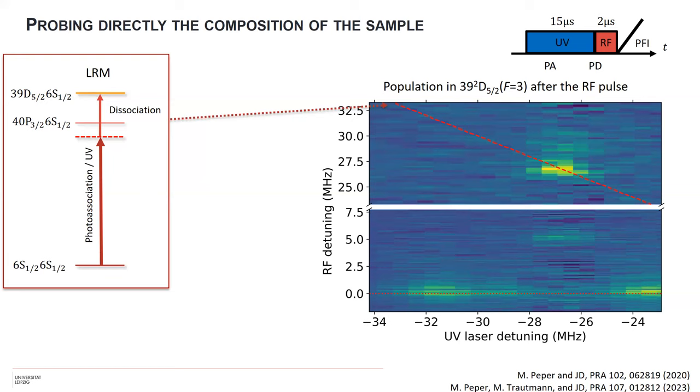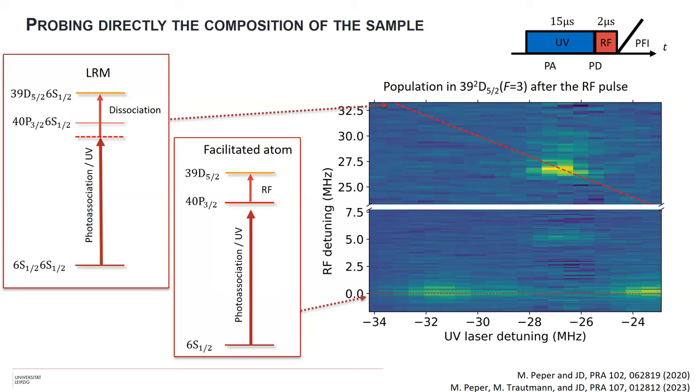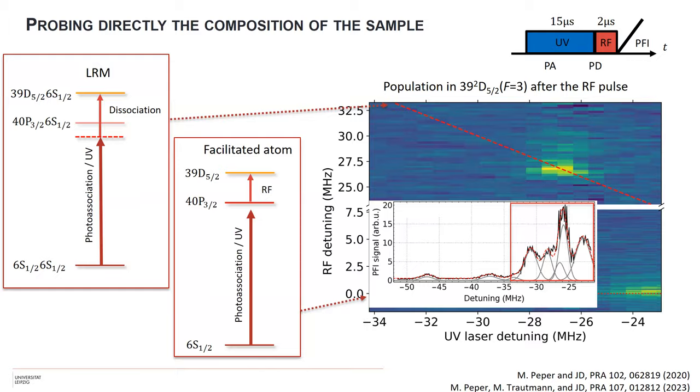We can also probe directly the composition of the sample by using RF spectroscopy. If we have a molecule and we shine in radio frequency at the right frequency, we can dissociate this molecule into a Rydberg atom in a D state and a ground state. Because the binding energy changes, this frequency changes. All the signals should lie on the curve in this 2D plot where I have laser detuning versus RF detuning. If we have ion-facilitated atoms, the transition frequency is always the same. From this measurement we can extract that all these states in that window are actually only facilitated atoms left, and only in this resonance we still have long-range Rydberg molecules when we probe the system.